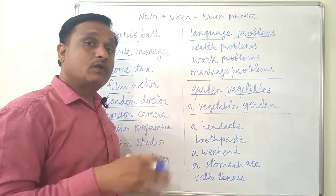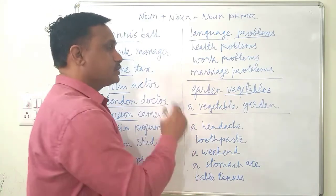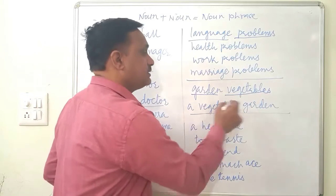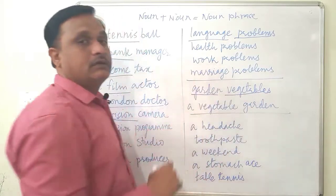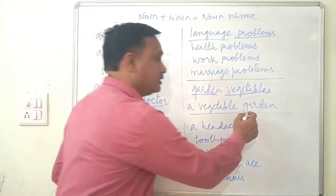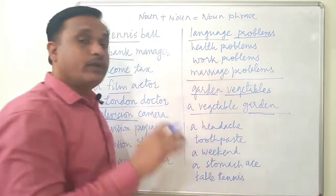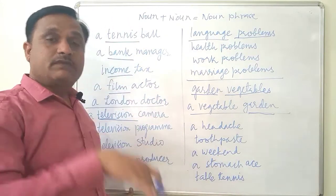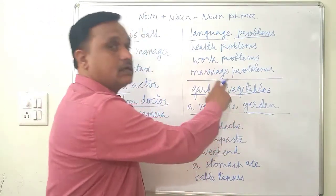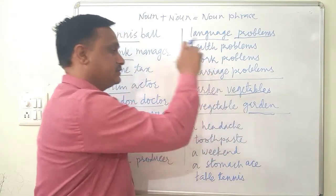Now here: 'garden vegetables' means vegetables which are grown in a garden — we are talking mainly about vegetables. But 'vegetable garden' means a garden in which vegetables are grown — here we are talking mainly about the garden. The main noun changes the meaning.